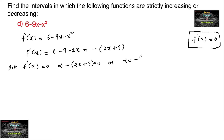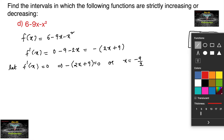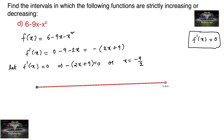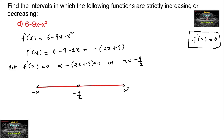We get x = -9/2. Now this x = -9/2 will divide the interval into two parts. In one interval, from minus infinity to -9/2, we can decide whether it is increasing or decreasing, and from the interval -9/2 to infinity, we can conclude whether it is increasing or decreasing.